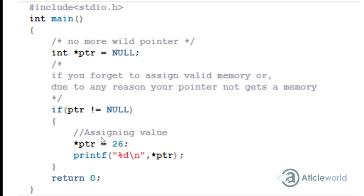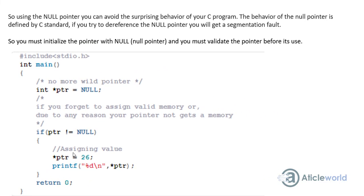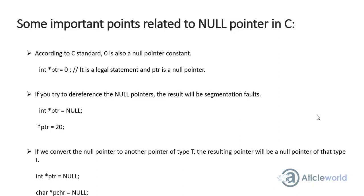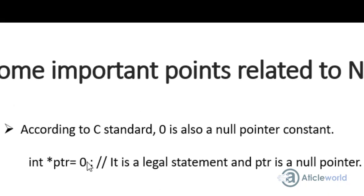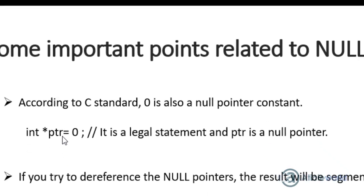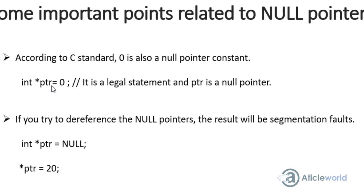This is the basic application of null pointer in C programming, and that is why you often see that at the time of pointer declaration, people assign a null pointer. Now let's see some important points related to the null pointer. The first point is that if we assign 0 to any pointer, that 0 is treated as a null pointer — the standard also explains that 0 is a null pointer. It is recommended to use the NULL macro instead of 0, but if you use 0, it definitely behaves like a null pointer.